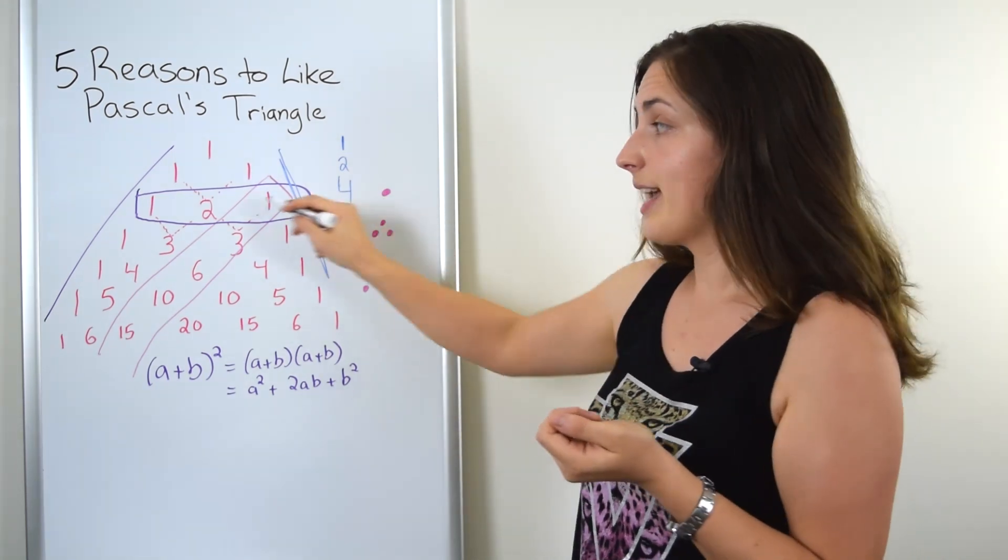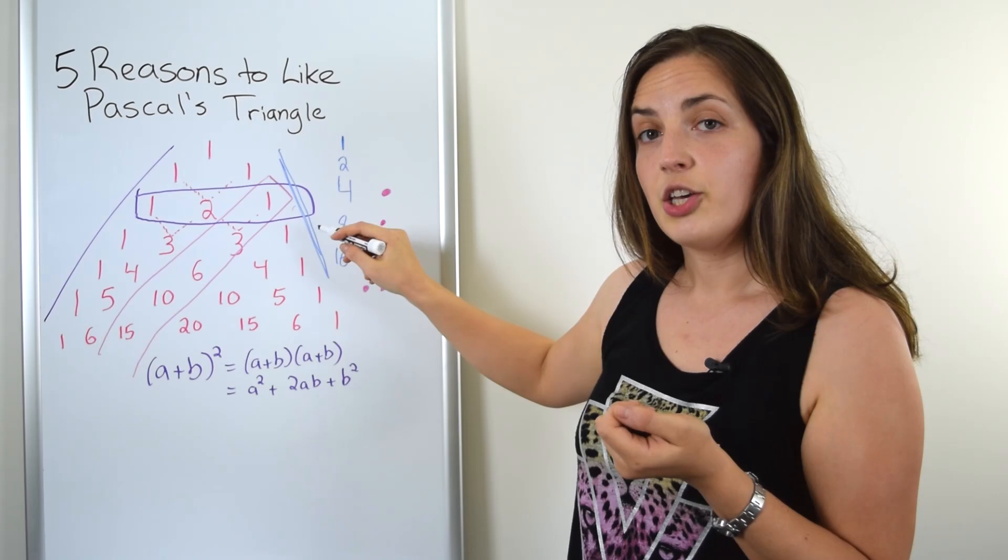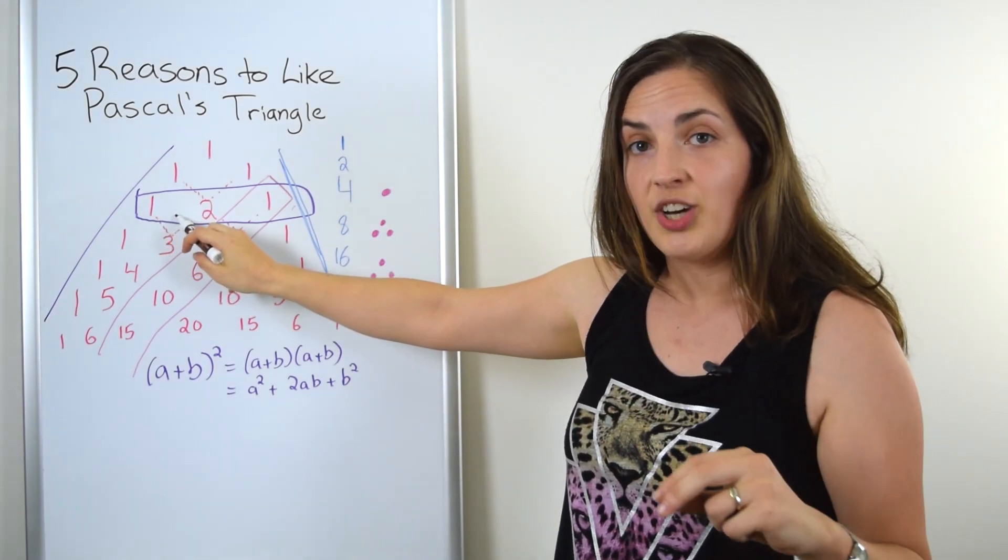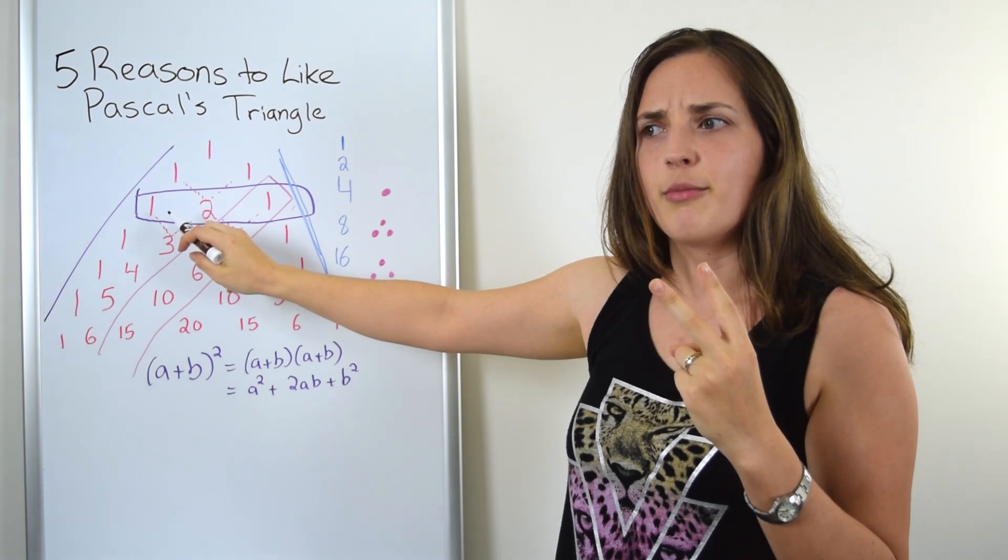If you take a look at the second row here, what that's telling you is there is one way to select no objects from a collection of two objects. Let's think about that for a moment.